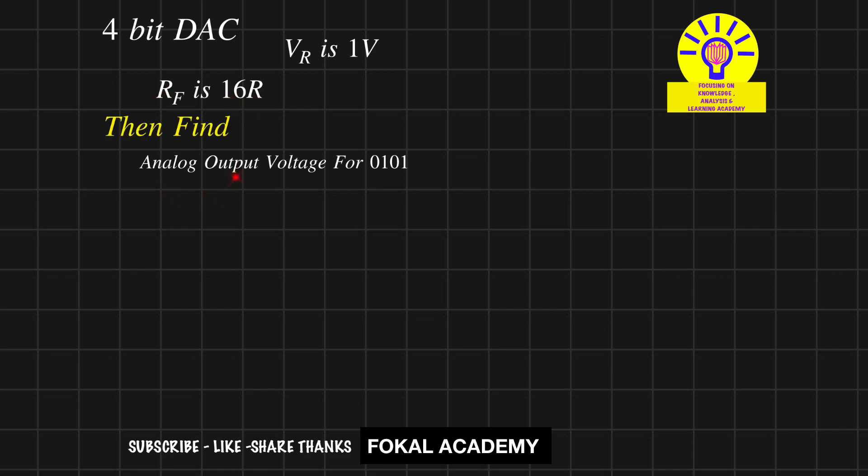Next, how can you find the analog output voltage for the given input that is 0101? This is the problem. So analog output voltage is equal to, for DAC, V0 equal to. So this is the reference voltage that is 1.